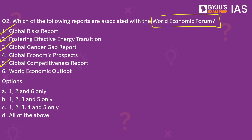The World Economic Forum, apart from standalone publications such as those mentioned, also produces landmark reports covering environment, education, individual industries, and technologies. Global Economic Prospects is a report produced by the World Bank, whereas World Economic Outlook is a product of the International Monetary Fund or the IMF. From this discussion, it becomes clear that the answer to this question is option B: 1, 2, 3, and 5 only.